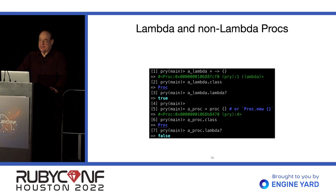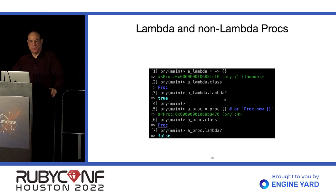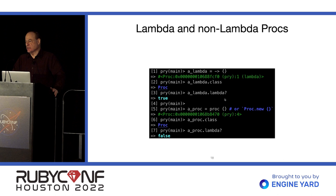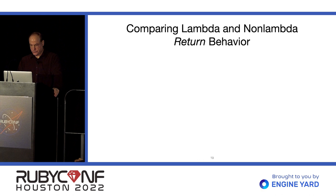The Proc class can produce instances that are Lambdas and instances that are not Lambdas. The naming is unfortunate because the name of the class, Proc, is the same as the name of the non-Lambda Proc when we define it using the proc keyword. So in spoken language, if somebody says 'proc', it's really ambiguous. For that reason, I usually use the term 'non-Lambda Proc' when I mean an instance of the Proc class which is not a Lambda. A Lambda's class is Proc, and lambda? returns true; a Proc's class is also Proc, but lambda? returns false.